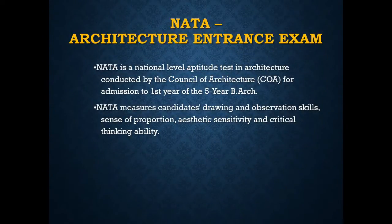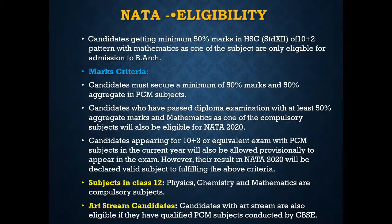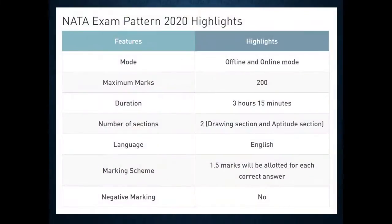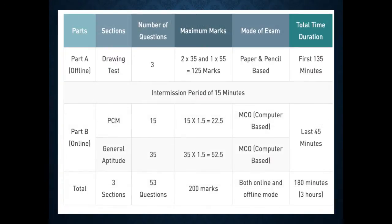NATA — National Aptitude Test in Architecture — is a national level architecture entrance exam. The NATA exam pattern includes two modes: offline and online. Maximum marks are 200, duration is 3 hours 15 minutes, and there are 2 sections: a drawing section and an aptitude section. The language is English, and one and a half marks are allotted for each correct answer.